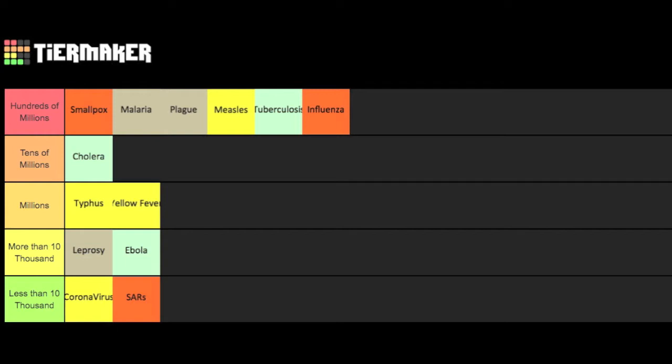Hello everyone, welcome back. Today I'm going to be talking about the major pandemics that have occurred through history and the modern day. I will be talking about 13 separate diseases that you can see arranged in a tier list based upon the amount of deaths that have occurred. For the sake of brevity, I've divided this into three parts. In this video, I will talk about SARS, the coronavirus, Ebola, and leprosy, also known as Hansen's disease. So without further ado, let's begin.